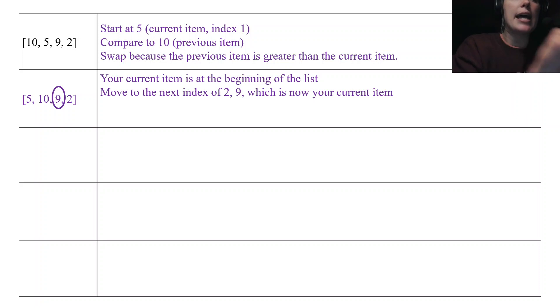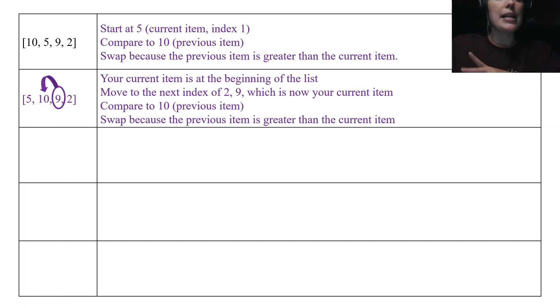Once our current item is at the beginning of the list, our current index moves up to 2. So we used to be at index 1. Now we are at index 2 as our current item. So now we're going through the loop again. 9 is our current element. It compares it to 10. It looks back because everything to the left is going to be sorted and everything to the right is going to be unsorted. So this is where it looks back and figures out where to insert it. So comparing to 10, 9 is less than 10, so you're going to swap them.